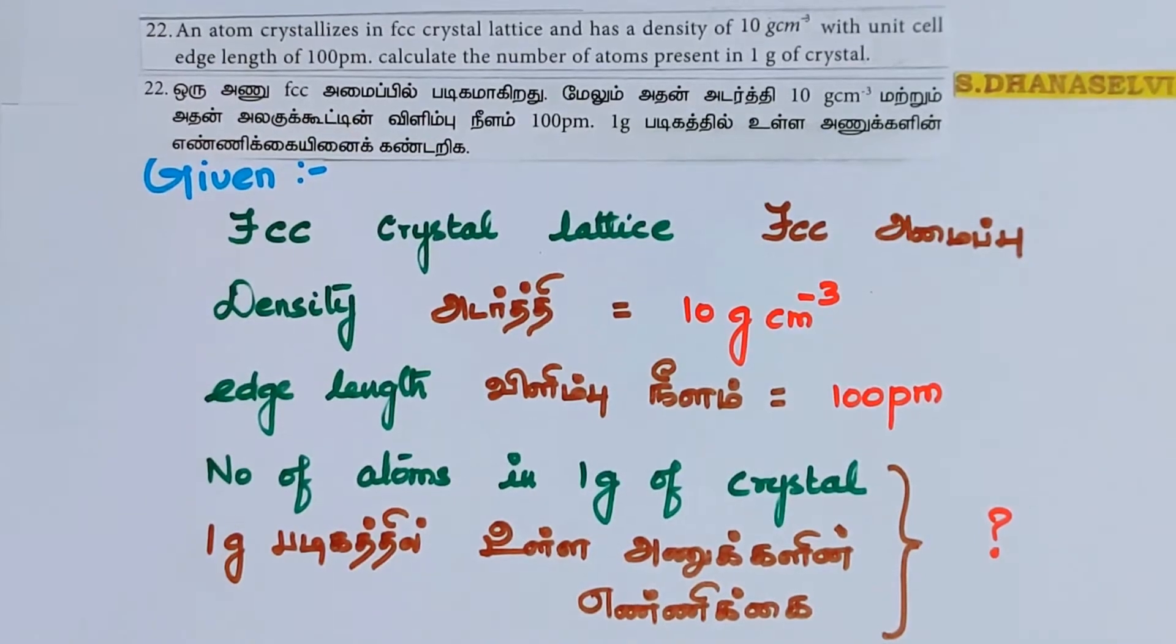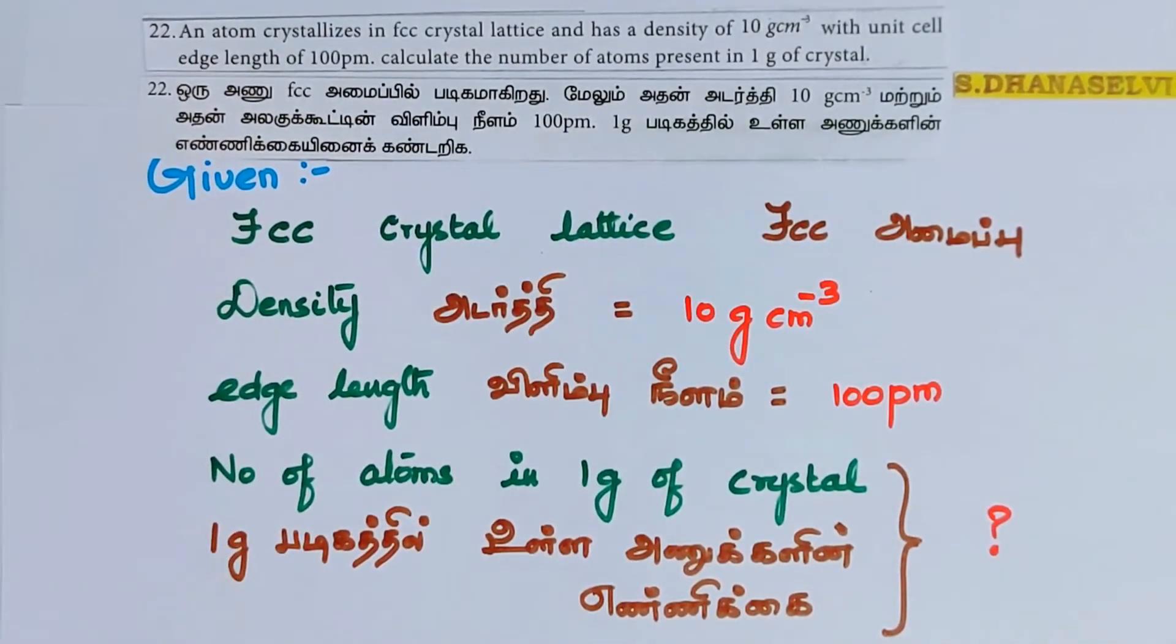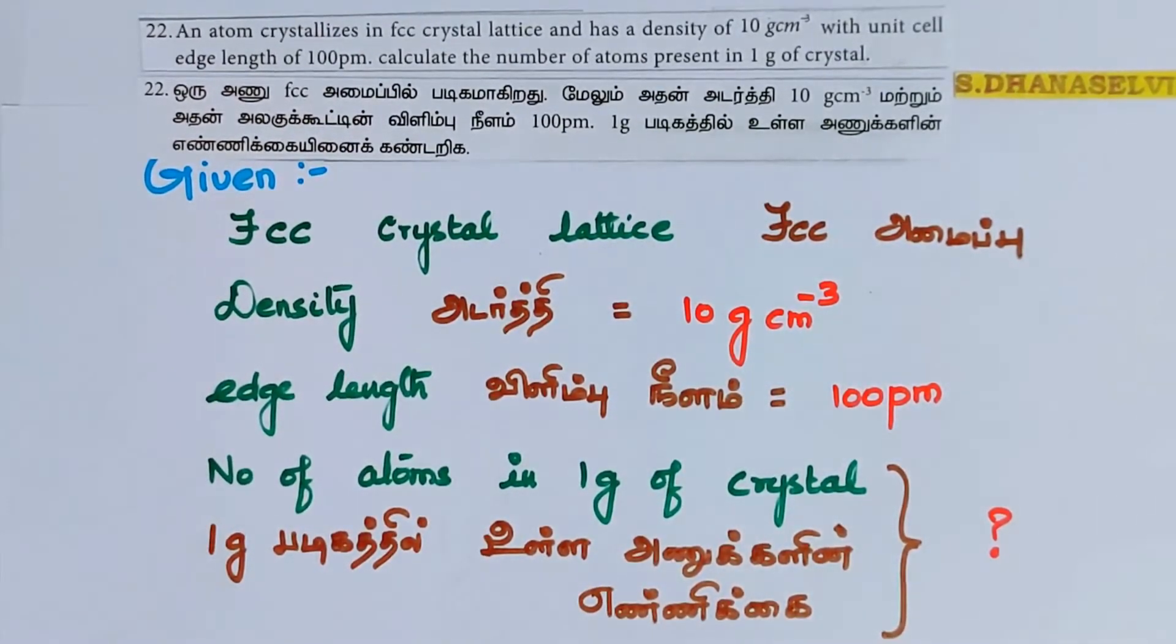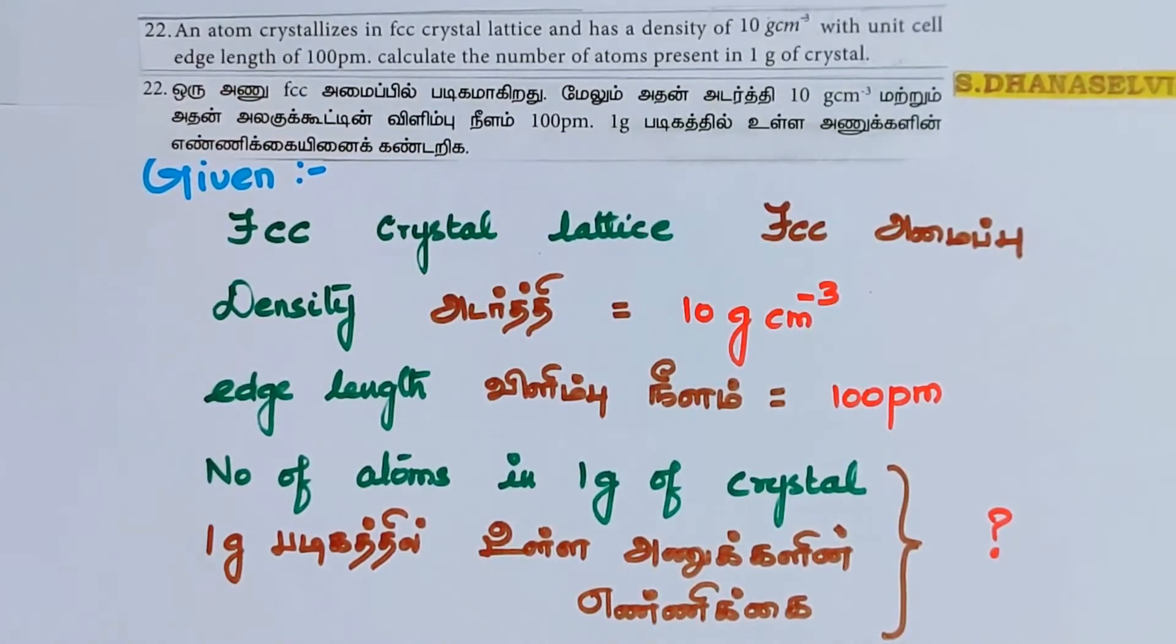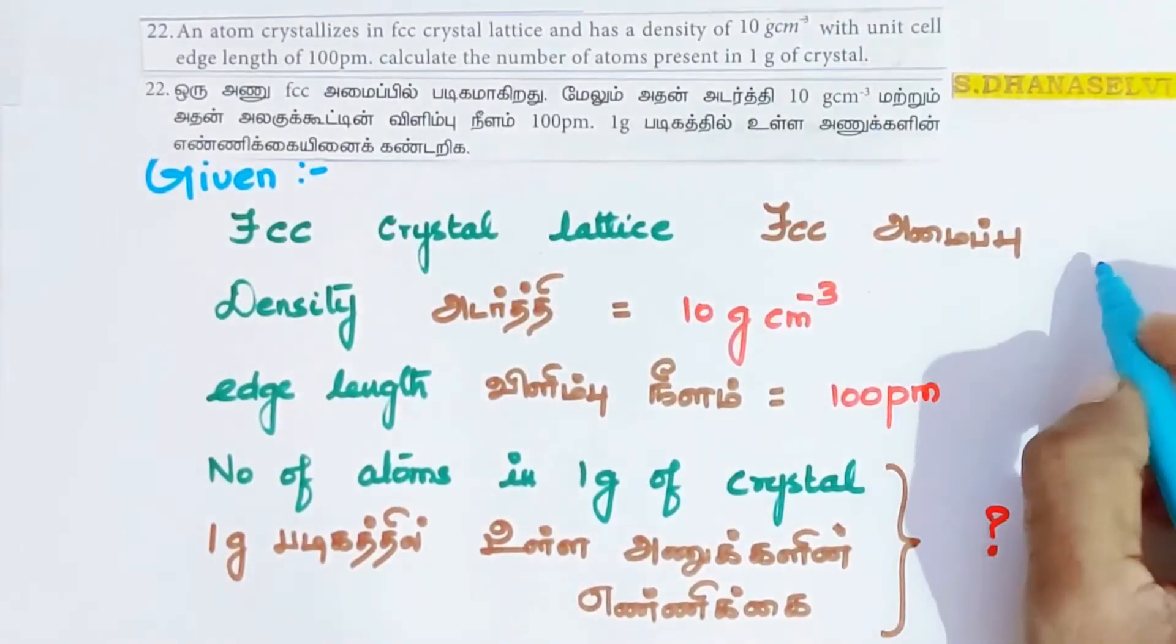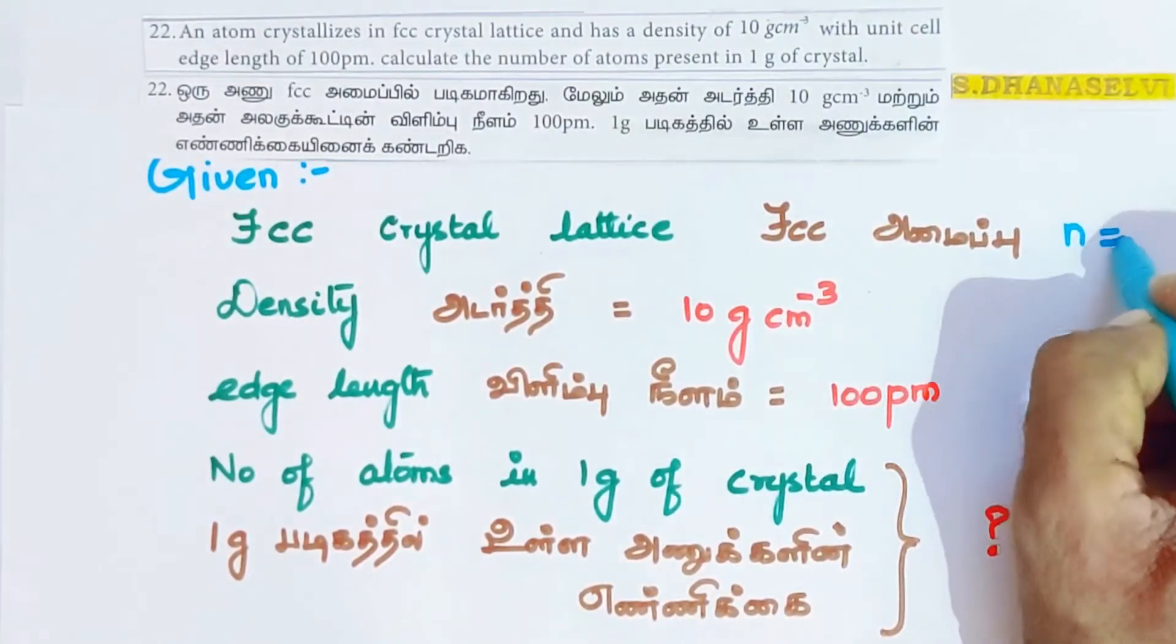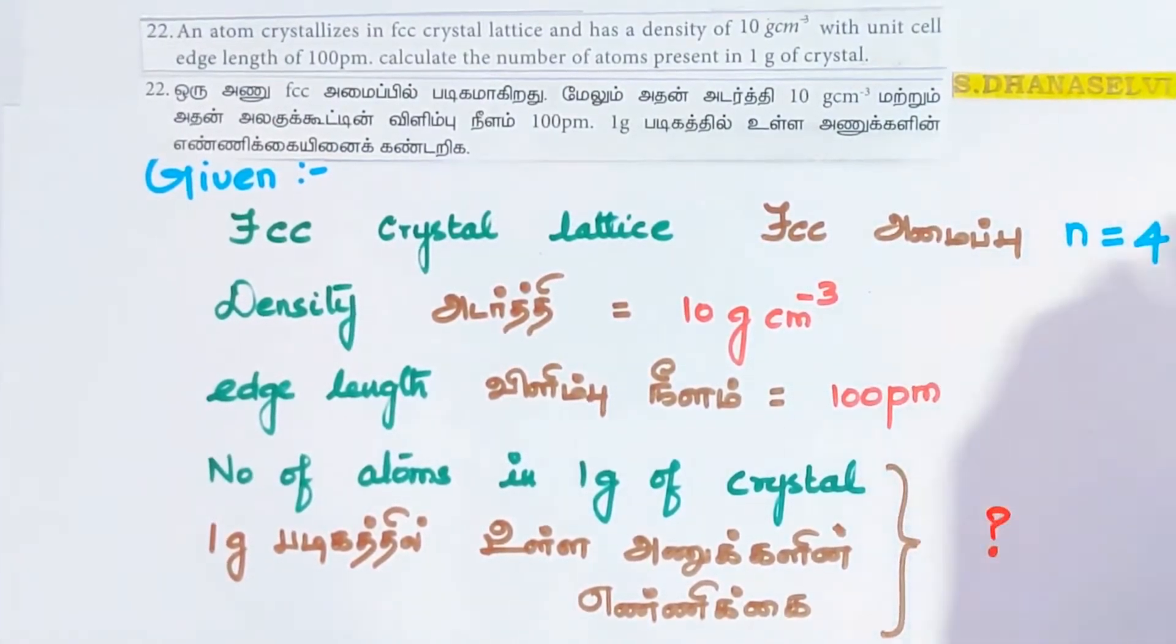From the question, FCC crystal lattice is given. This is a hint that tells us the number of atoms per unit cell, n. For FCC, n is equal to 4.